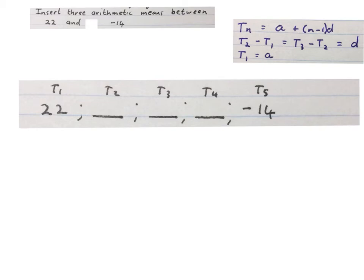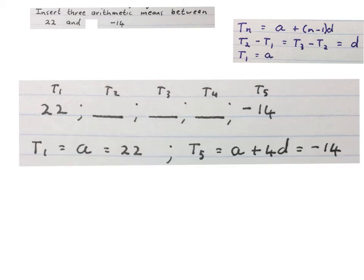Now in this case we are not going to add in three different variables here. We know that term 1 is A and that is 22, and term 5 is A plus 4D and that is minus 14. Now we can use simultaneous equations with two variables.